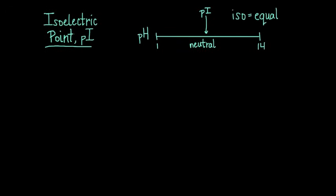And iso means equal. It's nice to know the isoelectric point for an amino acid because then we can predict whether or not it will be charged at a certain pH. And who doesn't want the power of prediction?